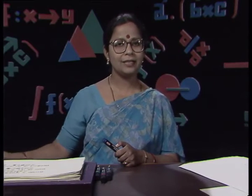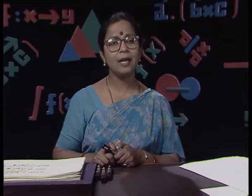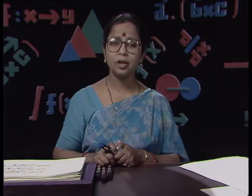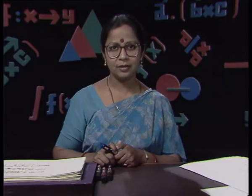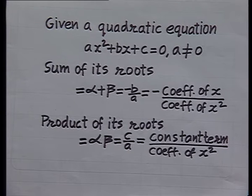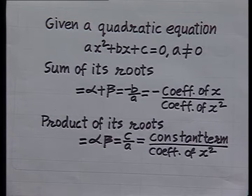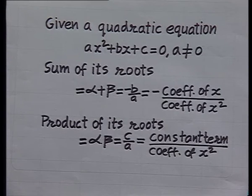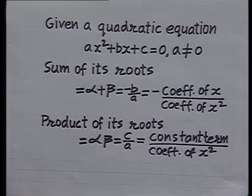We also learnt to find the sum and product of the roots of a given quadratic equation without actually finding the roots. That is, given ax² + bx + c = 0, a ≠ 0, the sum of roots is α + β = -b/a, which is minus the coefficient of x upon the coefficient of x², and the product of roots is α·β = c/a, which is the constant term upon the coefficient of x².